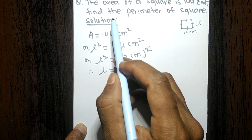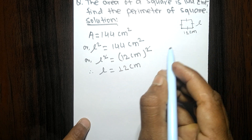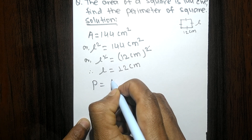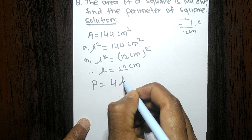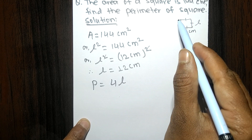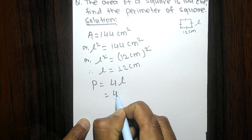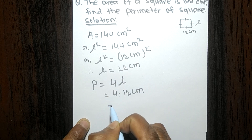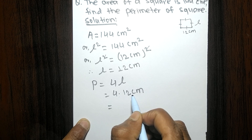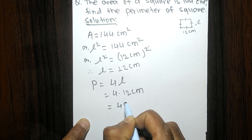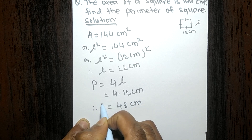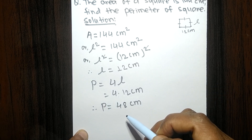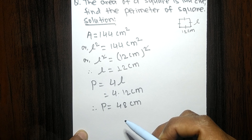Now we find the perimeter of the square. The perimeter of a square equals 4 times l, where l is the length of each side. So 4 times 12 centimeter equals 48 centimeter. Therefore, the perimeter of the given square is 48 centimeter.